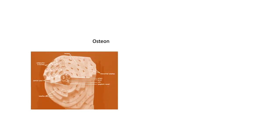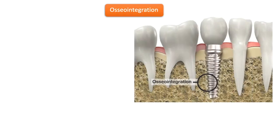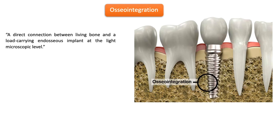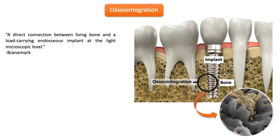Osseointegration — the term derives from 'osteon,' the Greek word for bone, and the Latin word 'integrate,' meaning to make whole. These two words join together to form osseointegration, which refers to the process that takes place between living bone and the surface of an implant. Osseointegration was defined by Paul Ingvar Brånemark in 1969 as a direct connection between living bone and a load-carrying endosseous implant at the light microscopic level.